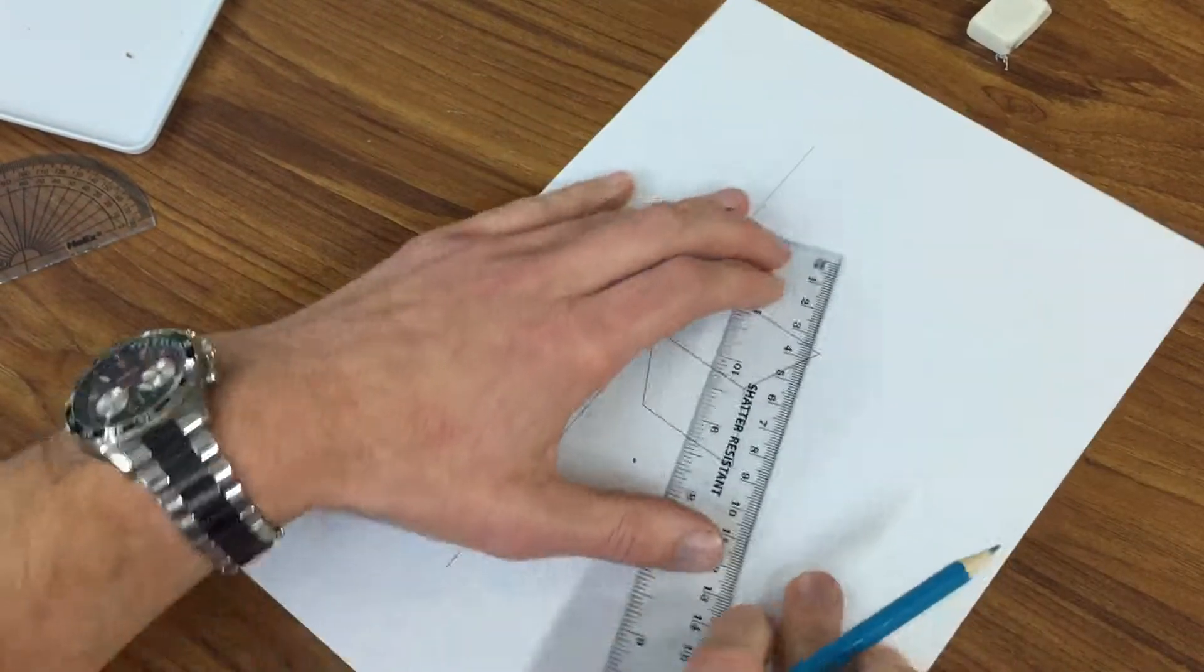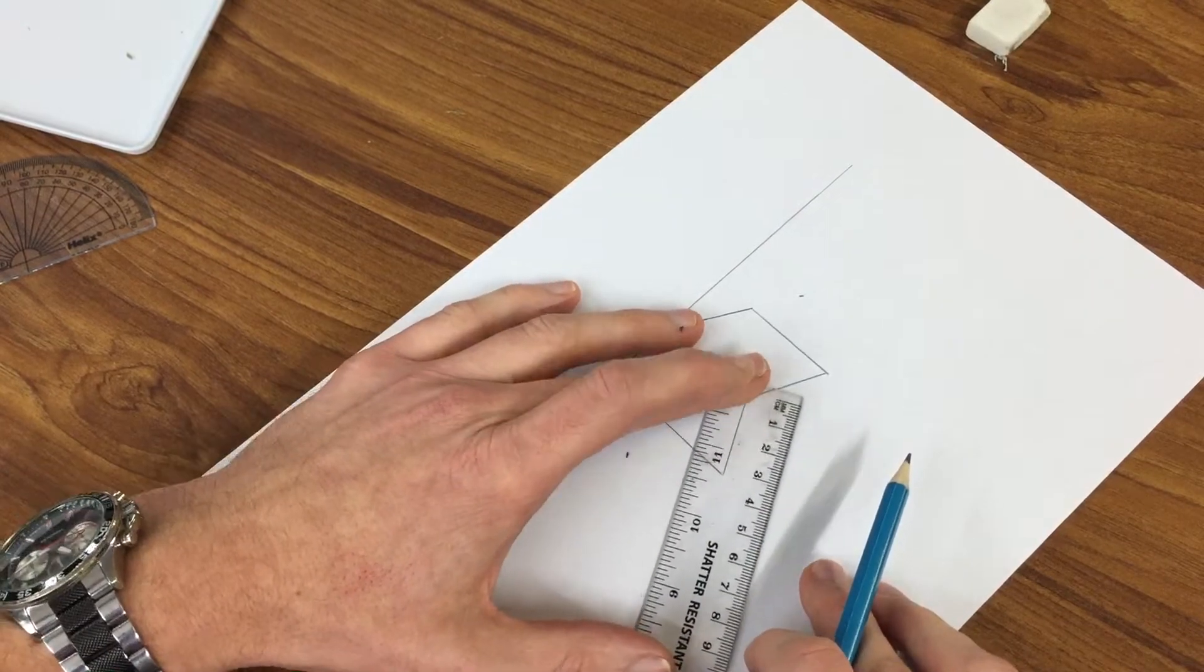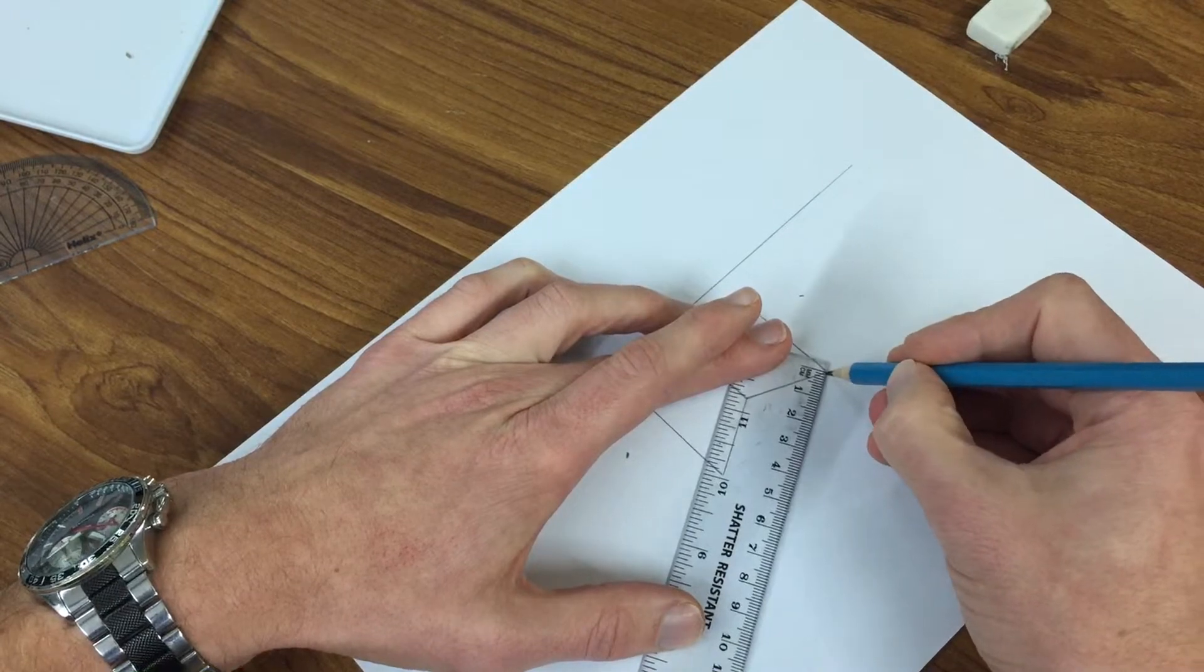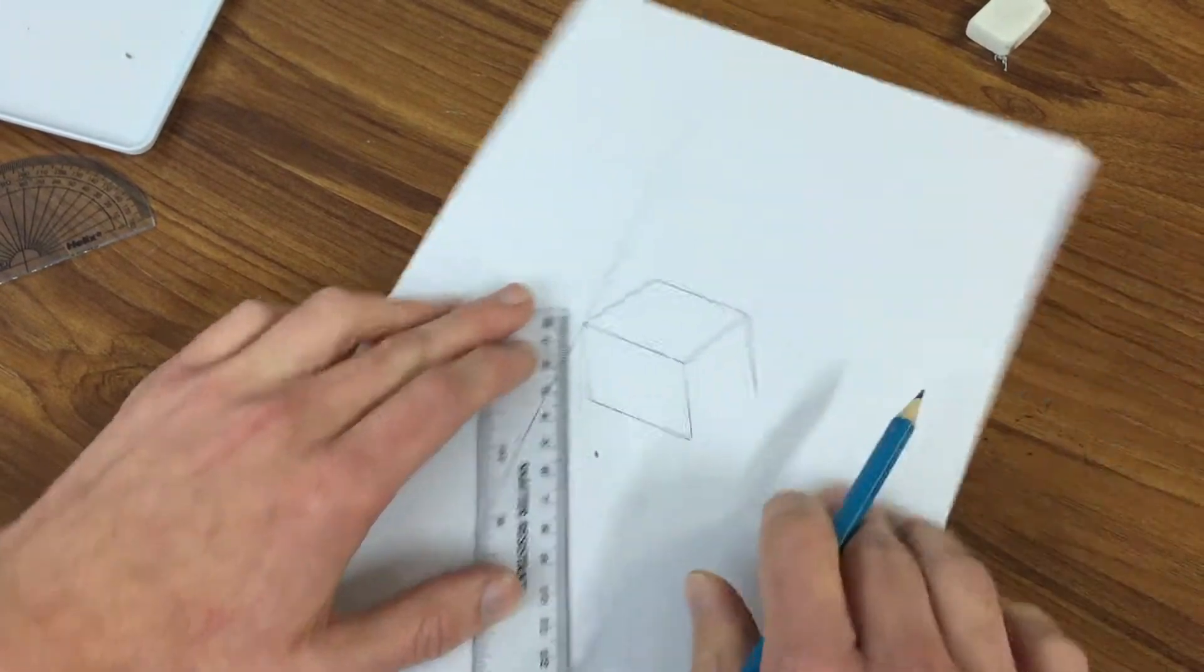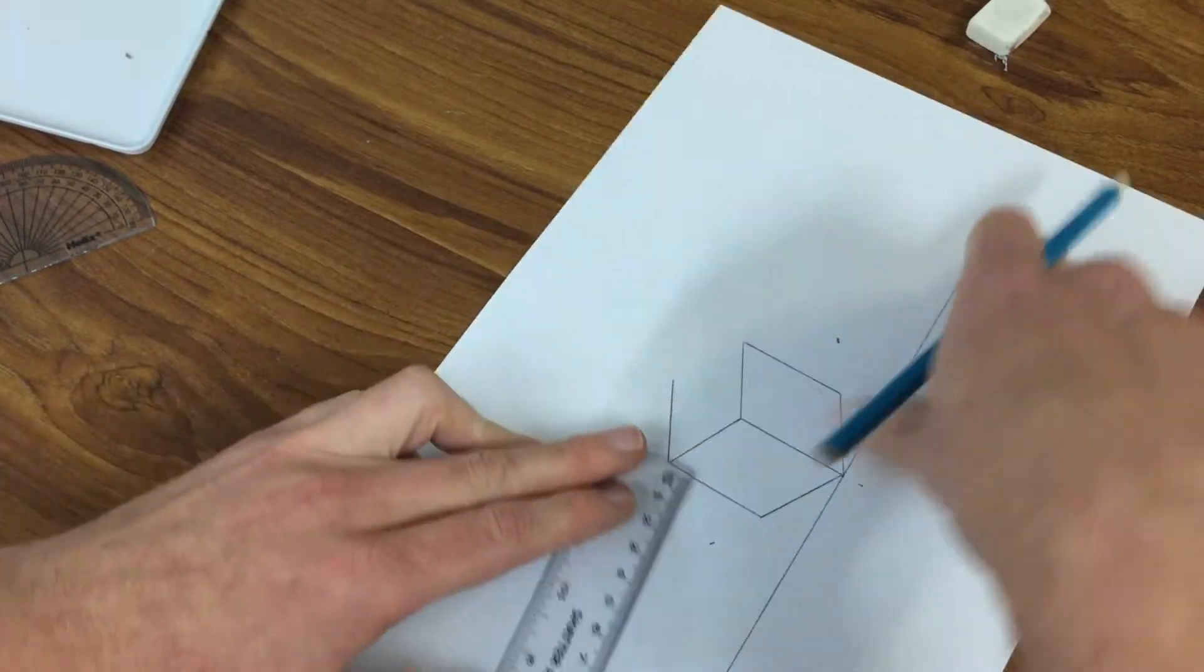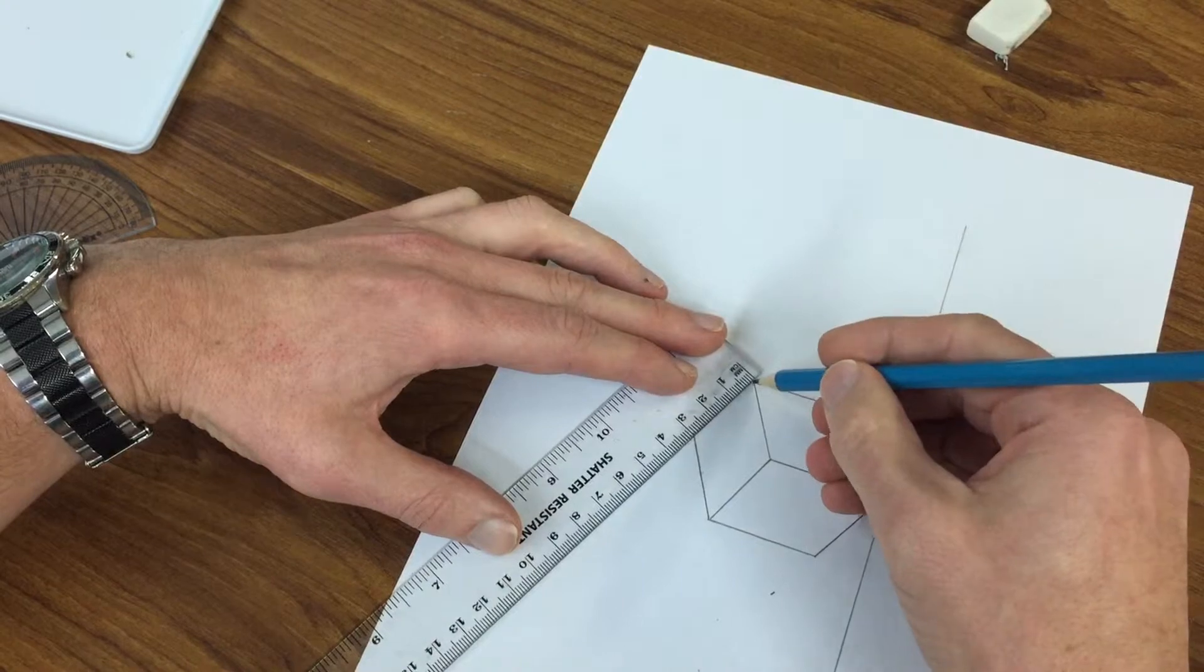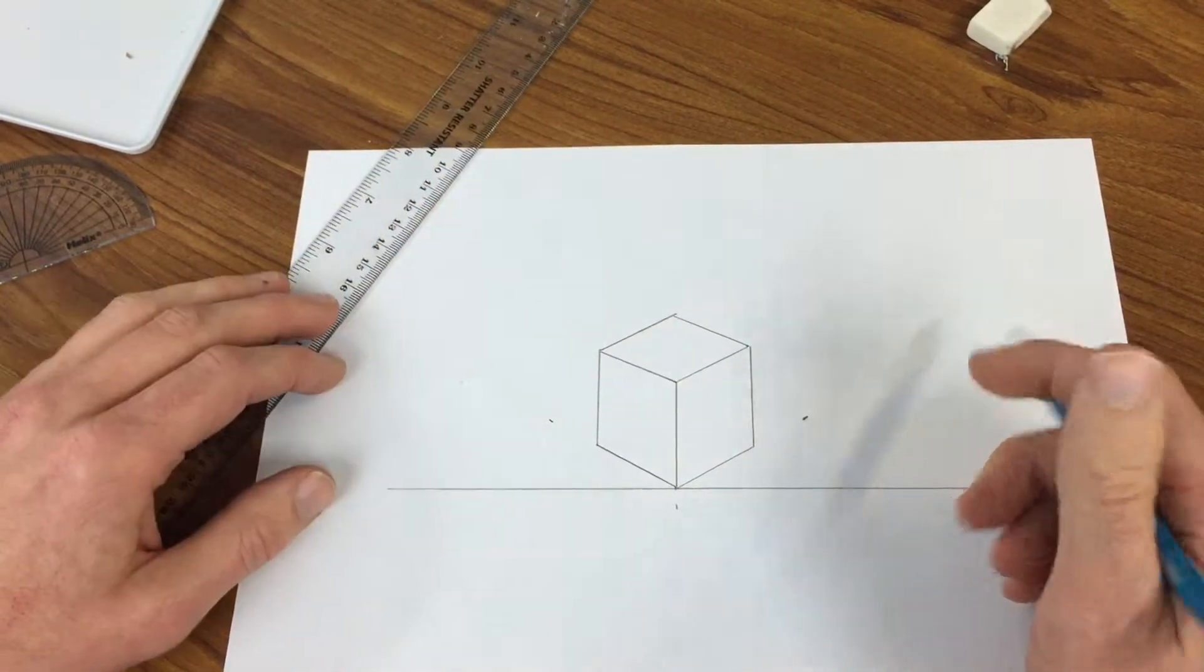So if I put my ruler sort of lined up there and then just slide it up and then measure 31. As long as that line is parallel with that one, it'll be fine. And again this line here, slide it up, should be parallel. Alright, so that's the basis of my box.